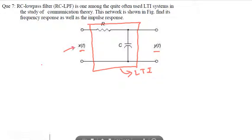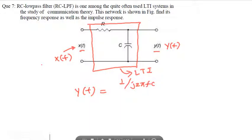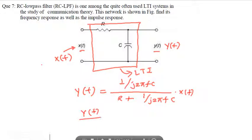We can write the Fourier transform in the frequency domain of x(t) as X(f), and the Fourier transform of y(t) as Y(f). Using voltage division, Y(f) equals 1 over j2πfC, divided by R plus 1 over j2πfC, multiplied by X(f).